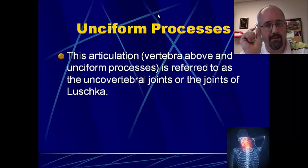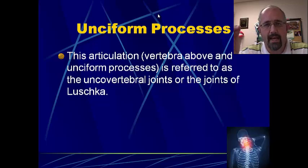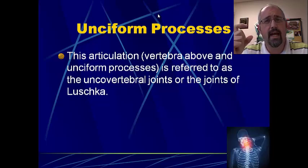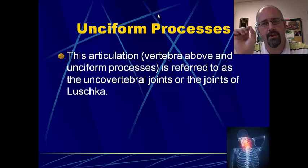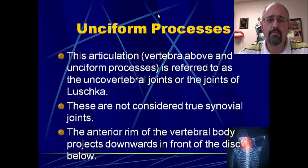The articulation of the unciform process from the vertebrae above and the vertebrae below is known as the uncovertebral joints, or — a much more sexy name — the joints of Luschka. You'll see these two names given to these joints. Basically it's the connection point of the ridge of bone of the vertebrae below to the vertebrae above. They're not really true synovial joints — they don't have a true synovial capsule or true synovial fluid — but they are joints nonetheless.